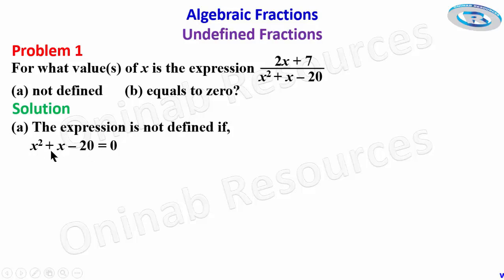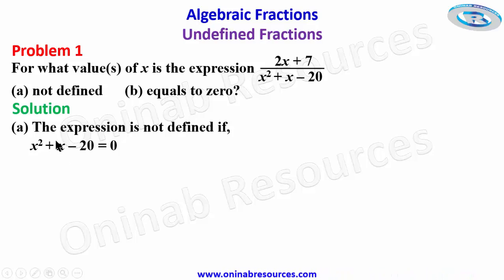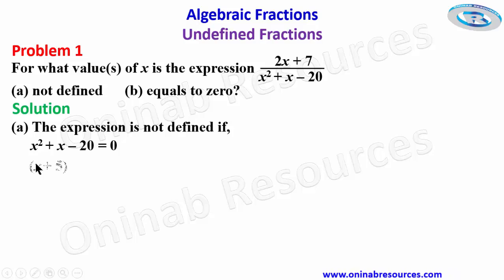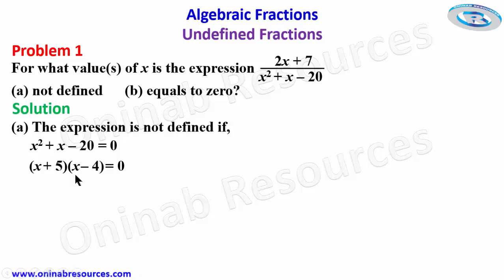We solve by factorization. We look for two factors of negative 20 whose sum is positive 1 — the coefficient of x. Those factors are positive 5 and negative 4, since 5 − 4 = 1 and 5 × (−4) = −20. So we have (x + 5)(x − 4) = 0.